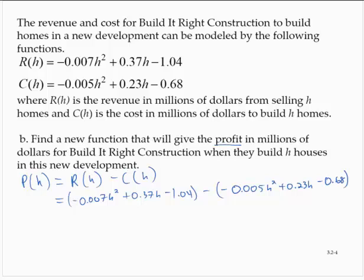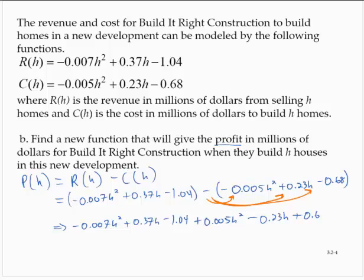Now, of course, since we're subtracting, remember that subtraction distributes through the entire second polynomial. So I can rewrite this as negative 0.007 H squared plus 0.37 H minus 1.04 plus 0.005 H squared minus 0.23 H plus 0.68.